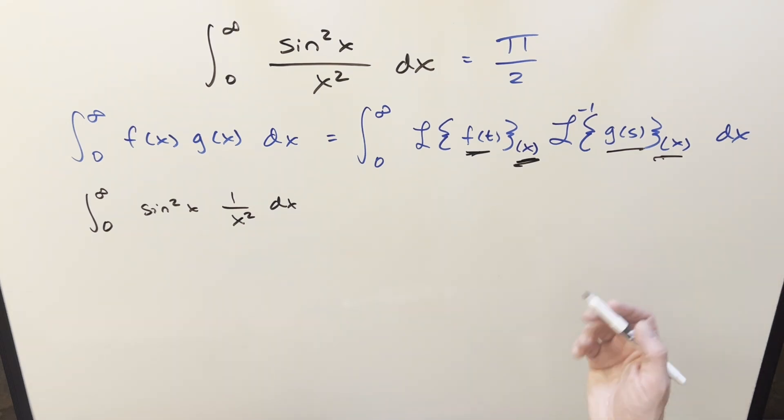Of course, you could change that as well. So all these variables can be switched around as long as you're consistent with it. So if our sine squared x is the f of x, let's just set it up for this.